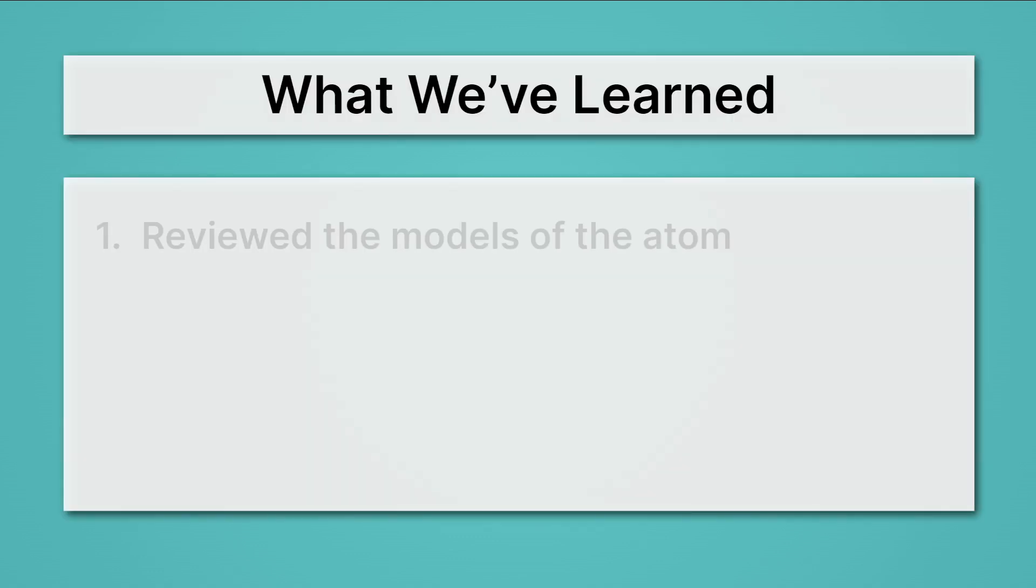Let's review what we've learned. First, we reviewed the models of the atom. We started with Dalton's model of the atom, went on to the plum pudding model of the atom, which had the electron for the first time, then the planetary model of the atom, which showed the nucleus, and lastly the quantum model of the atom.